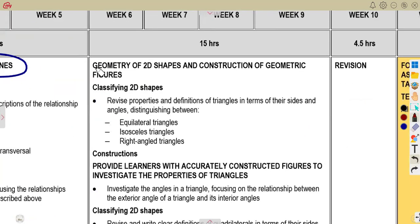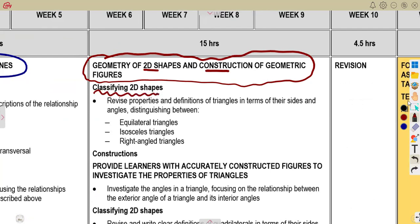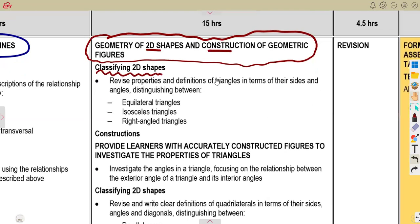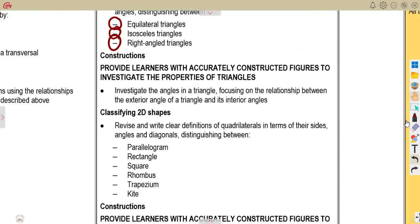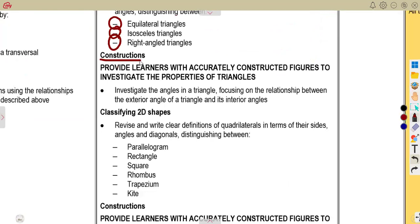The last part of this term is to understand the geometry of 2D shapes and construction of geometric figures. Classify 2D shapes by revising properties and definitions of triangles in terms of their sides and angles, distinguishing between the types of triangles which can be equilateral, isosceles, right-angle triangle, or any type that you're given. Then also you need to go through your constructions.